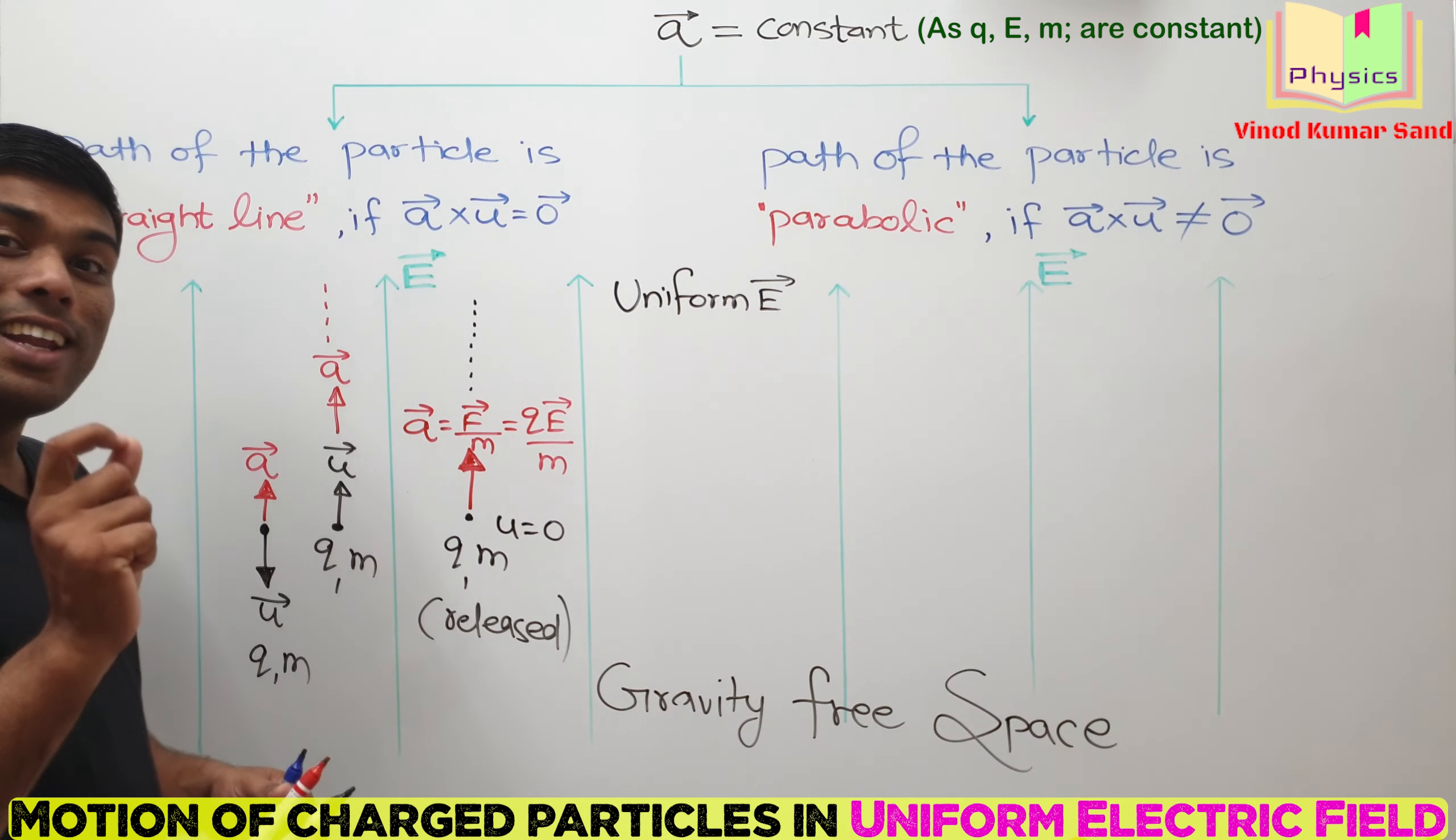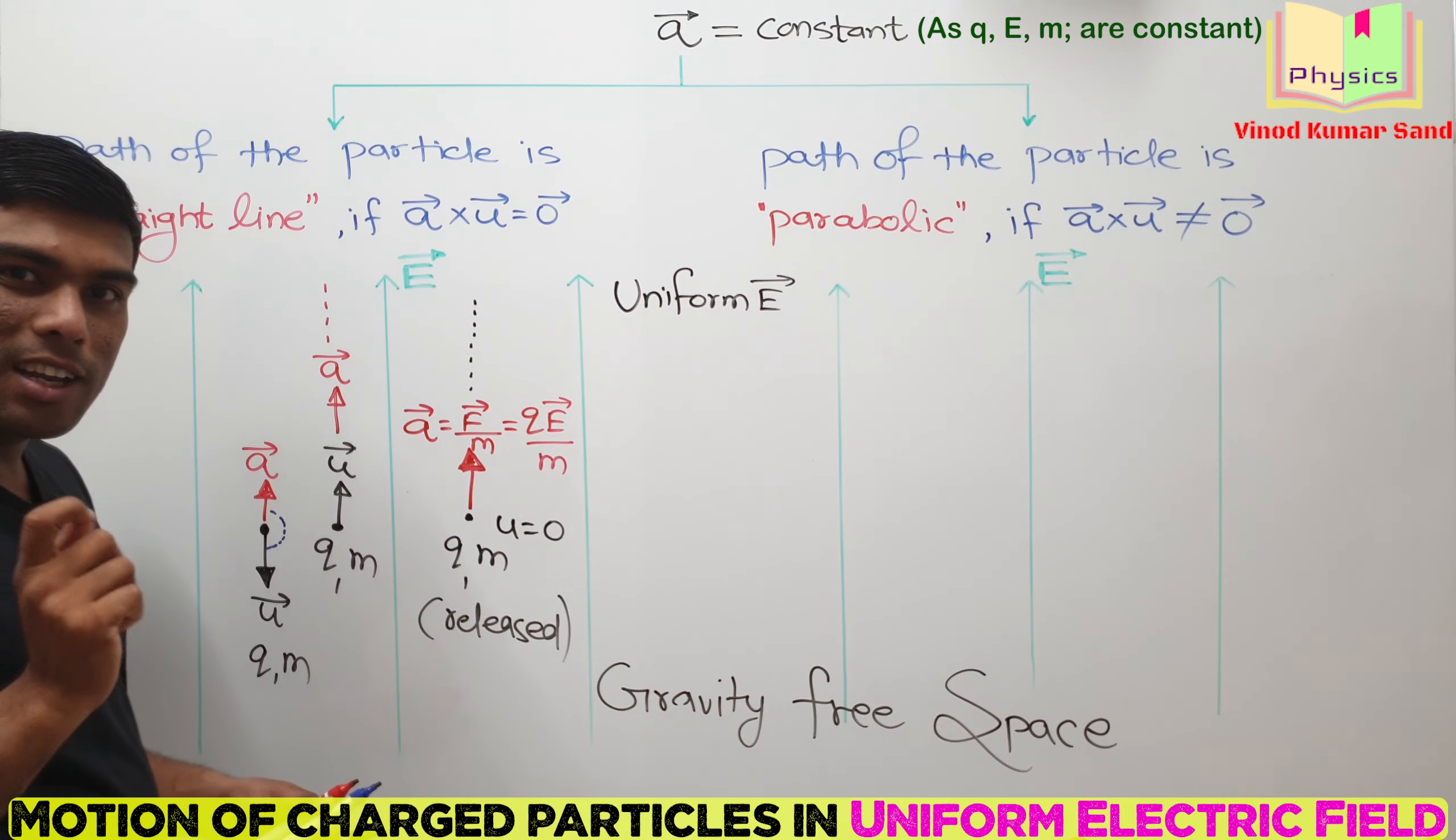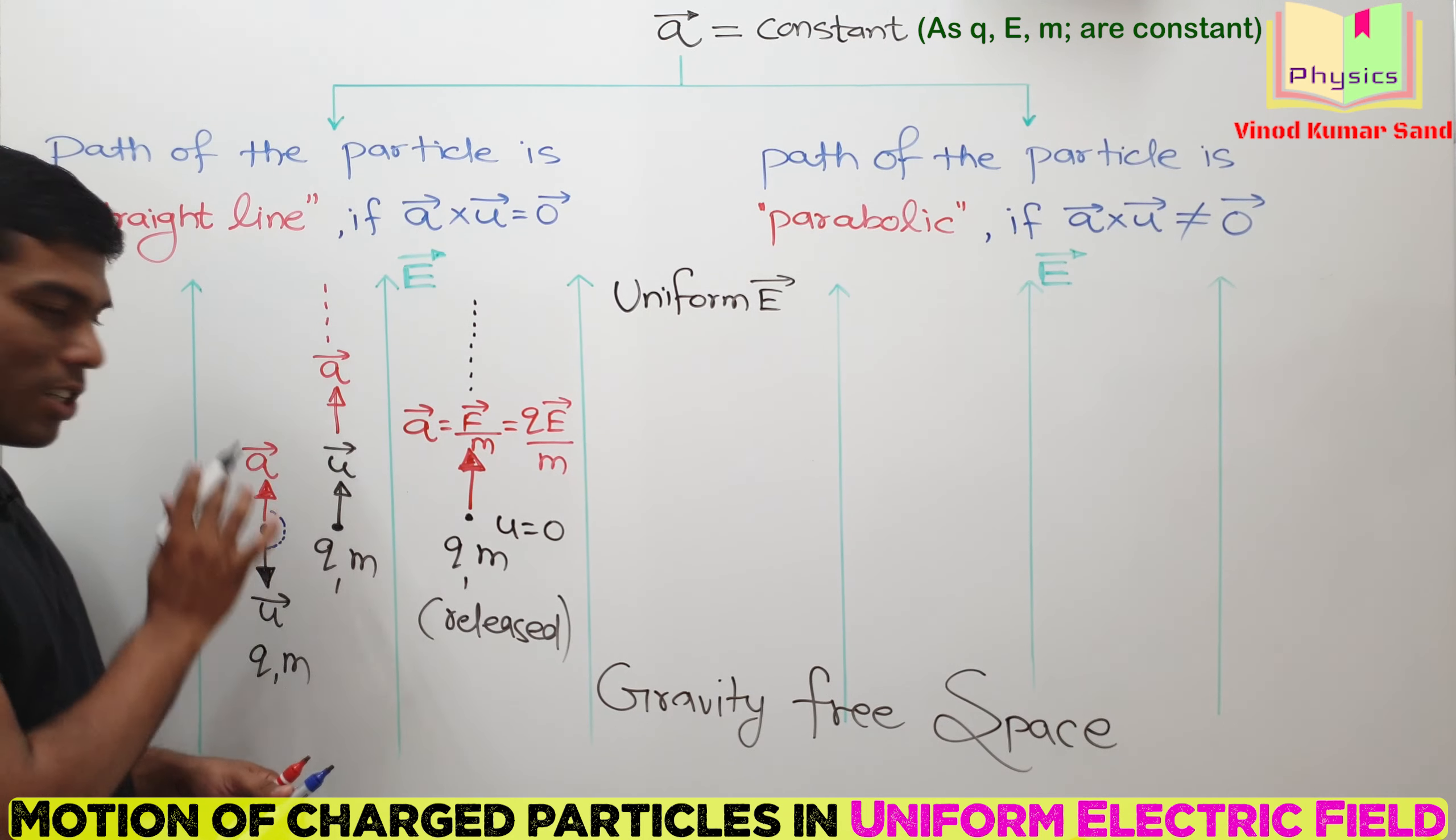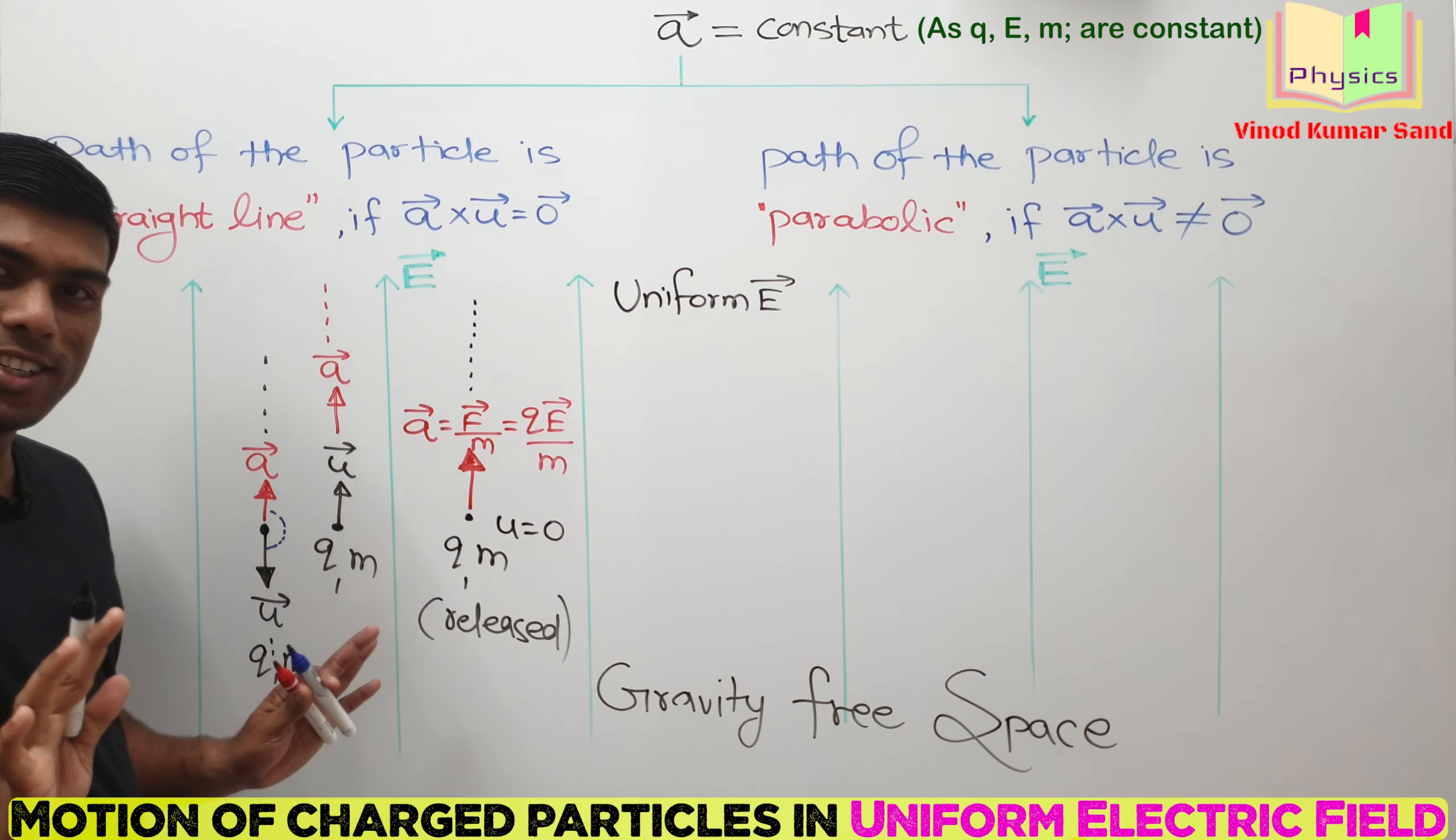The answer is again straight line. Because this time, the angle between A vector and U vector is 180 degree. And when we operate the cross product, here comes sine 180 degree. Everyone knows sine 180 degree will become zero, so the path of particle will be again a straight line. This particle will initially slow down, it will stop at some moment, and then will go back along this line straight.